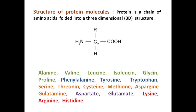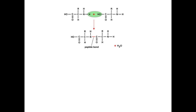When two amino acids join, the carboxyl group of one amino acid reacts with the amino group of another. This reaction forms a covalent bond called a peptide bond, which links the two amino acids. In this process, a molecule of water is released. As this process continues, a chain of amino acids linked by peptide bonds — called a polypeptide chain — is formed.